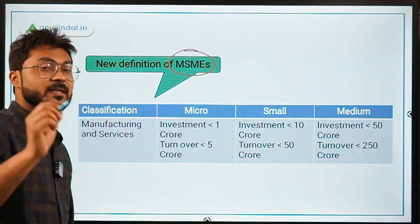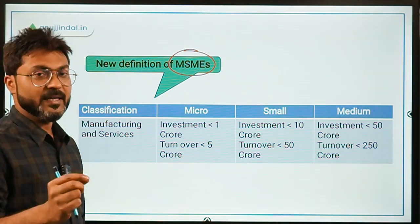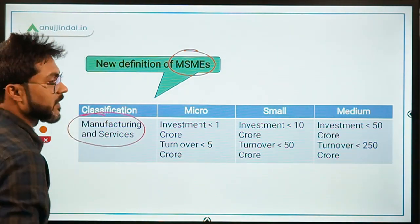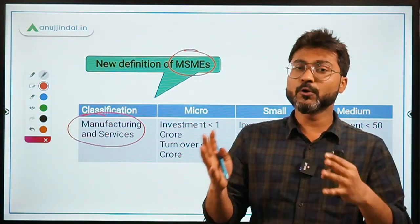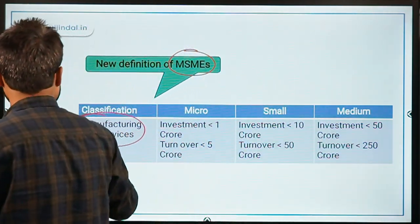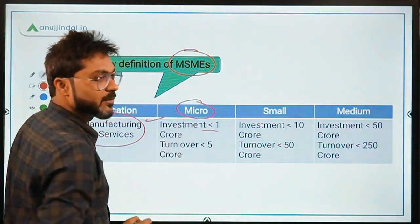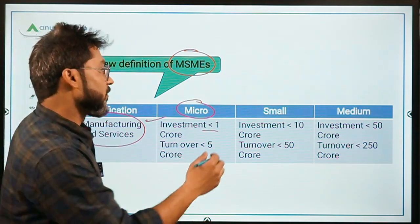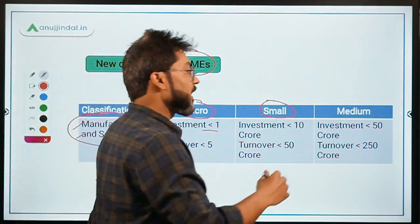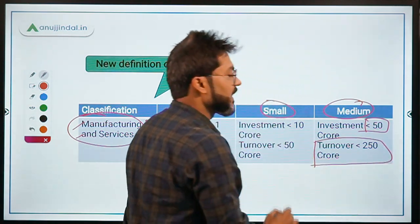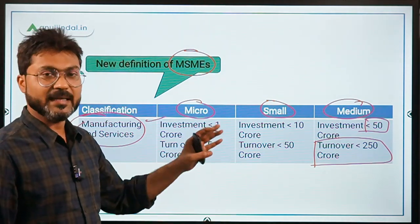The definition of MSMEs was changed under this package. Now MSMEs are classified into one single category — manufacturing and services combined — whereas earlier there were two separate categories. For micro enterprises: investment less than ₹1 crore and turnover less than ₹5 crore. For small enterprises: investment less than ₹10 crore, turnover less than ₹50 crore. For medium enterprises: investment less than ₹50 crore, turnover less than ₹250 crore.